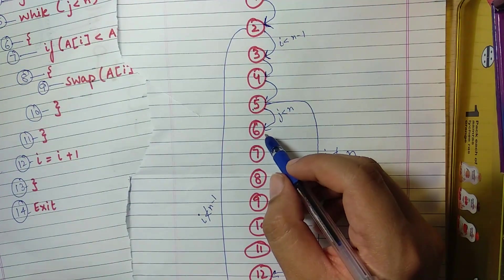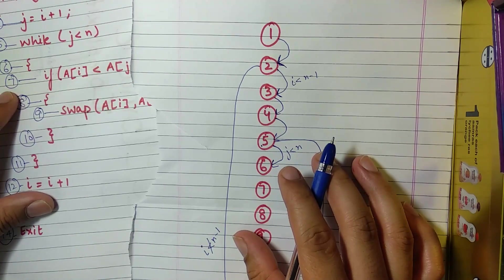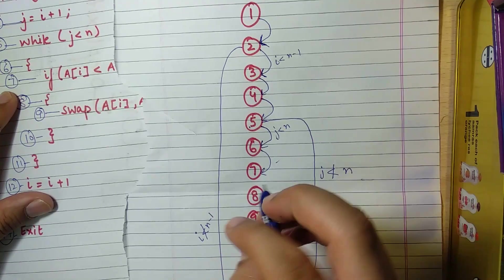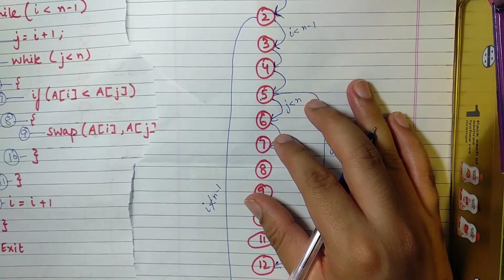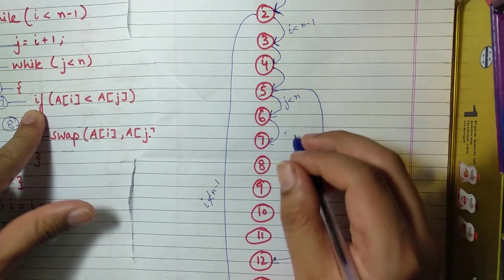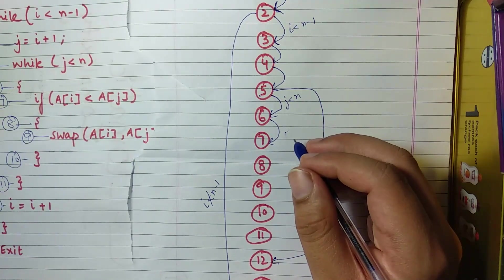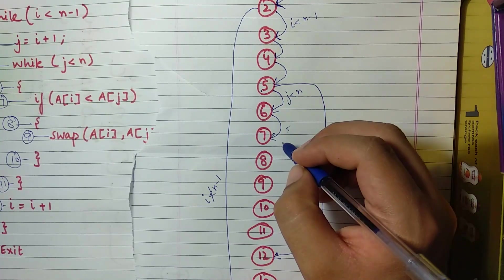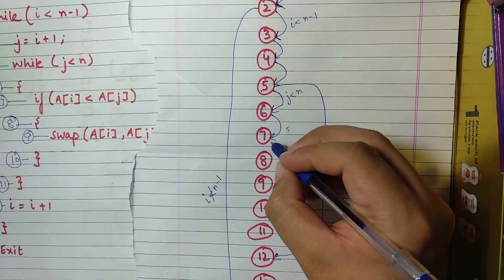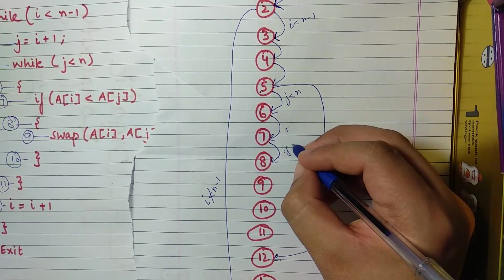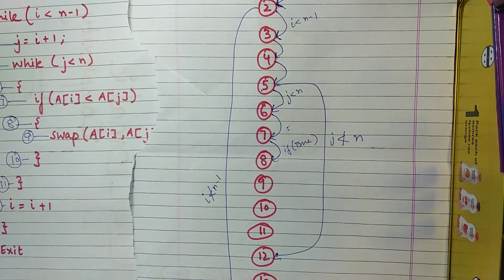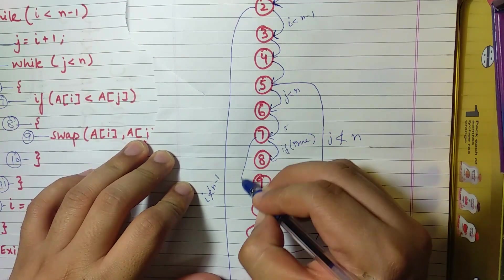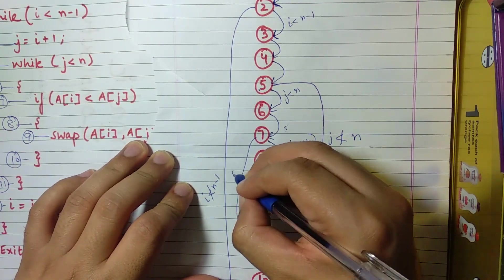After the 6th statement it will definitely go to the 7th statement, because it is a bracket. The 7th statement is an if statement telling if a[i] is less than a[j]. So if a[i] is less than a[j] and it is true, then it will go to 8. And if it is false, then it will go to 11.